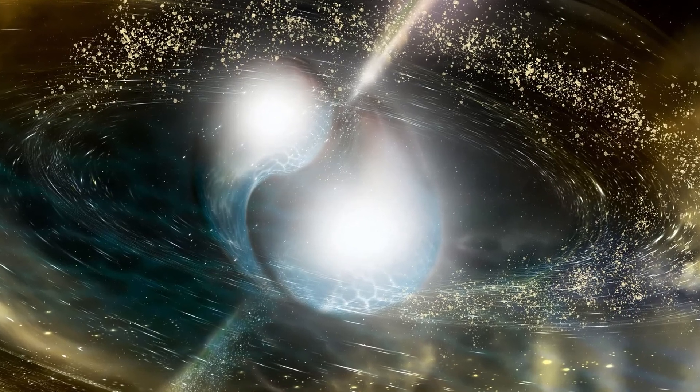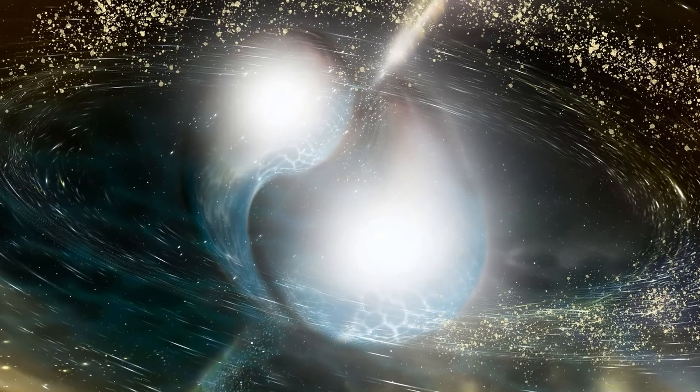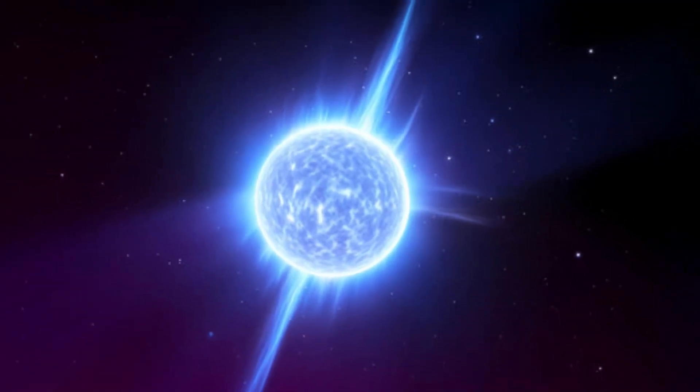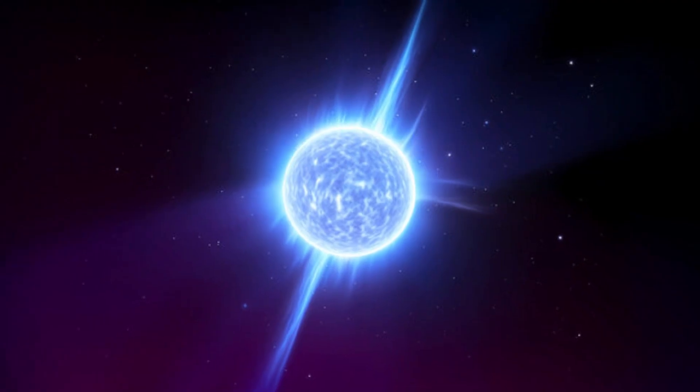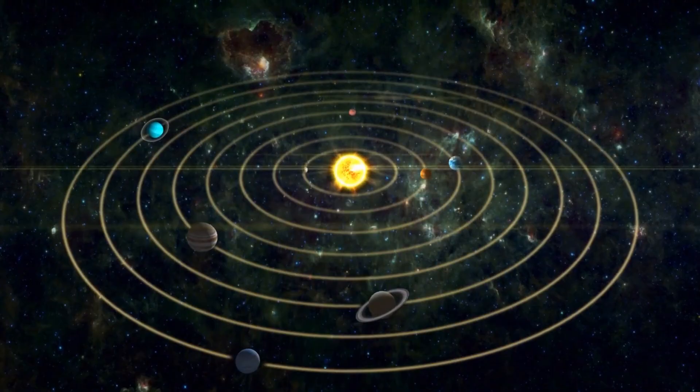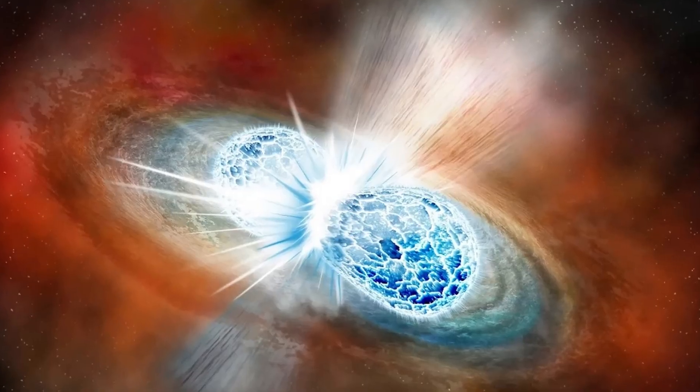However, the most remarkable neutron star phenomena occur when they interact with other neutron stars. Through the emission of gravitational waves, ripples in the fabric of space-time, their orbits degrade, ultimately leading to collision and the subsequent release of energy in a phenomenon known as a kilonova explosion.